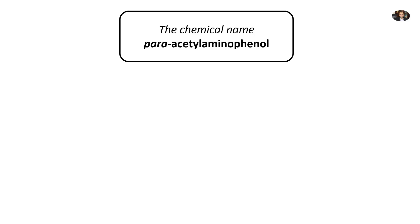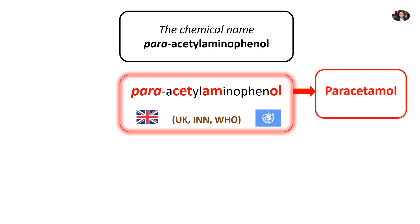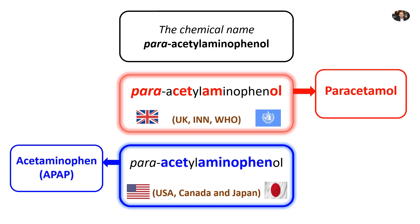The chemical name is para-acetylaminophenol — a complicated name. The UK followed the international non-proprietary name system, coordinated by the World Health Organization (WHO). The WHO chose 11 letters from this long name to constitute the internationally accepted generic name, paracetamol. However, the USA, followed by Canada and Japan, chose different 13 letters to build their own generic name, which is acetaminophen.